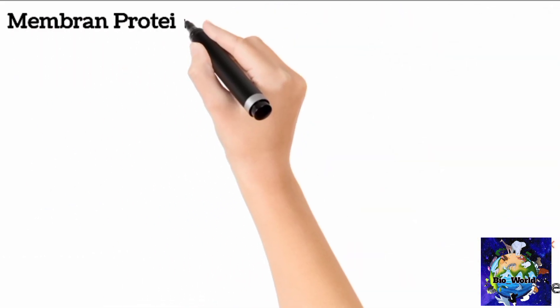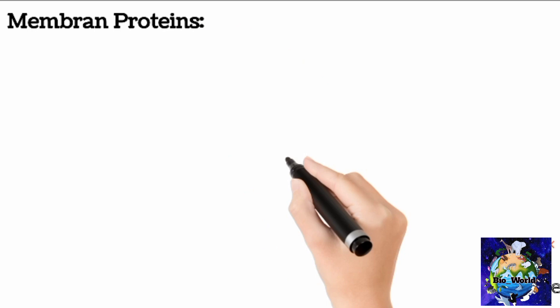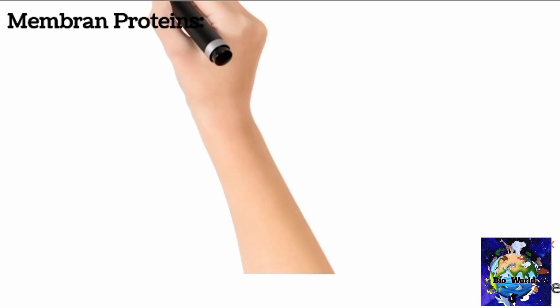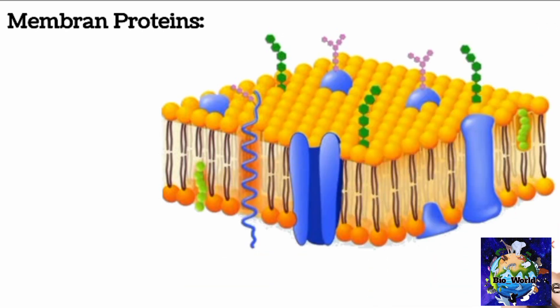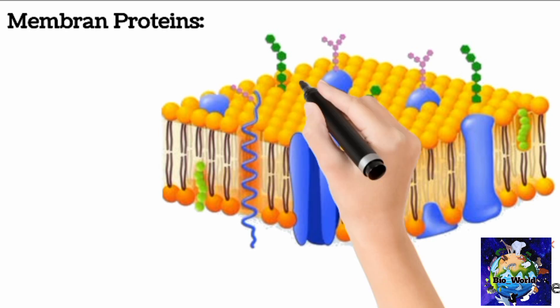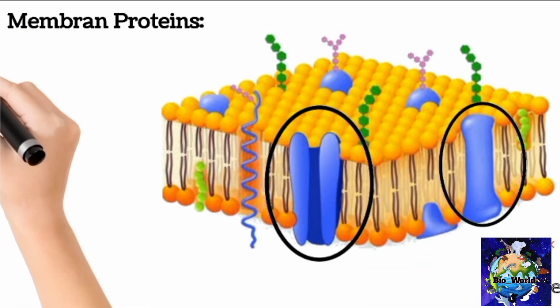Membrane proteins. Plasma membrane also contains proteins. Proteins are also chemical substances like lipids or other chemical substances that we will discuss later in biomolecule chapter. But anyhow, this is a plasma membrane structure. Blue color structures are the proteins that are embedded in phospholipid bilayer. These proteins are classified into two basic categories.